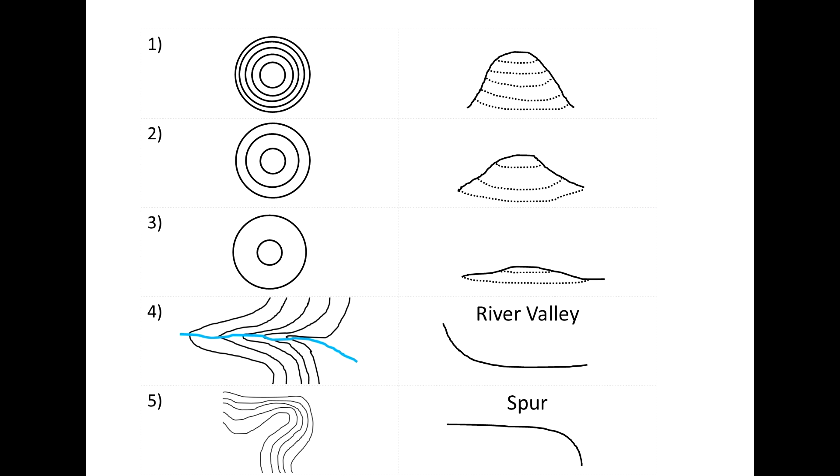So let's take a look at a few different examples of the types of relief you might find on ordinance survey maps, and how to interpret them.